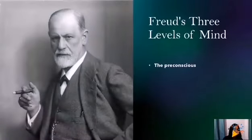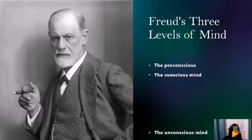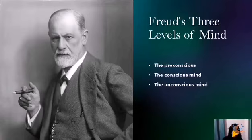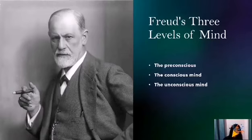To begin with, there are three levels of mind. The preconscious consists of anything that could potentially be brought into the conscious mind. The conscious mind contains all the thoughts, memories, feelings, and wishes of which we are aware at a given moment — the aspect of our mental processing that we can think and talk about rationally. This also includes our memory, which is not always part of consciousness but can be retrieved easily and brought into awareness.